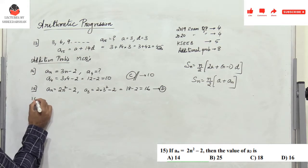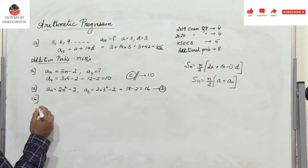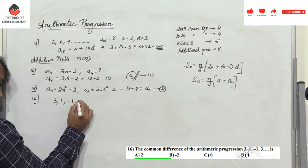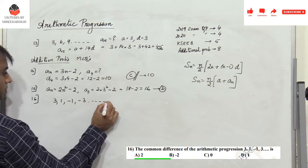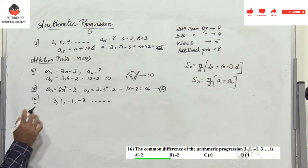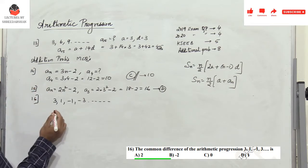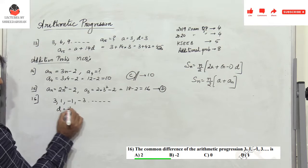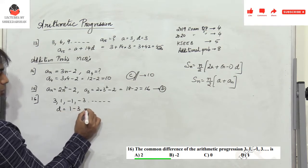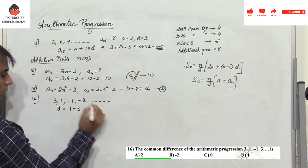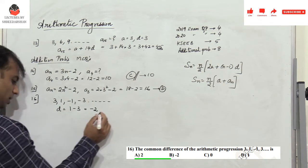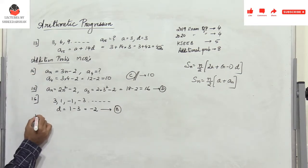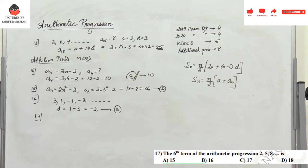Problem 16: find the common difference of 3, 1, -1, -3, ... The common difference d = second term minus first term = 1 - 3 = -2. The value -2 corresponds to option B, so B is the right answer.